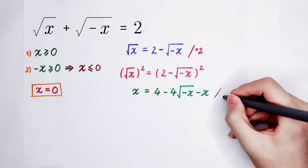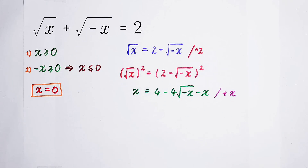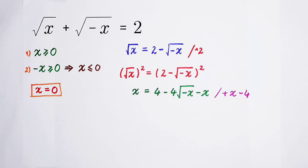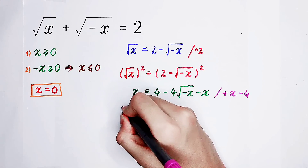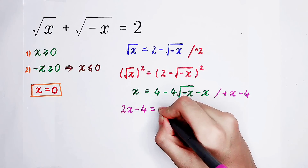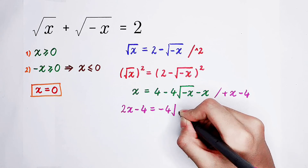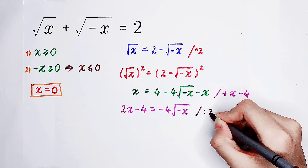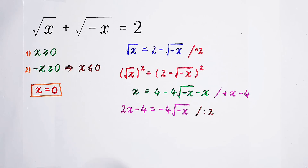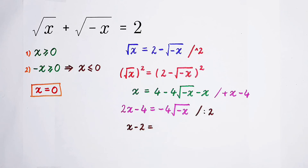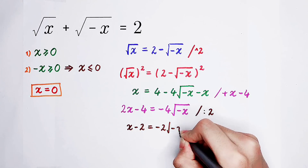Now add x to both sides and subtract 4 from both sides. On the left: x plus x is 2x, minus 4, giving 2x minus 4. On the right: negative 4 times the square root of negative x. We then divide both sides by 2, so the left becomes x minus 2, and negative 4 divided by 2 gives negative 2 times the square root of negative x.